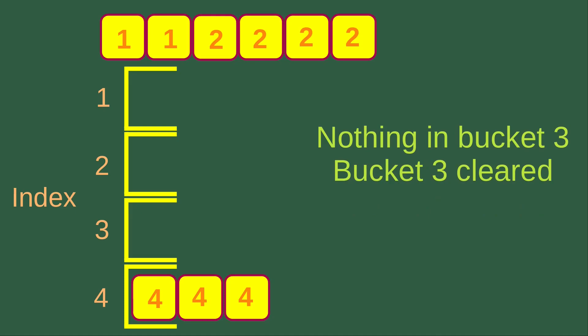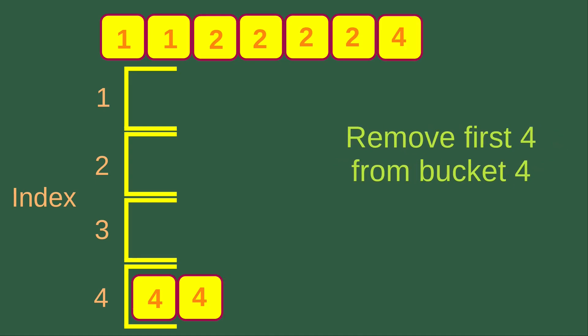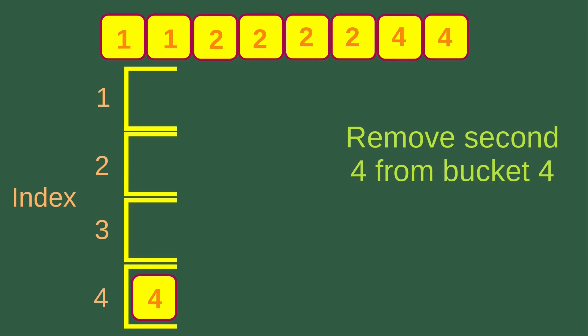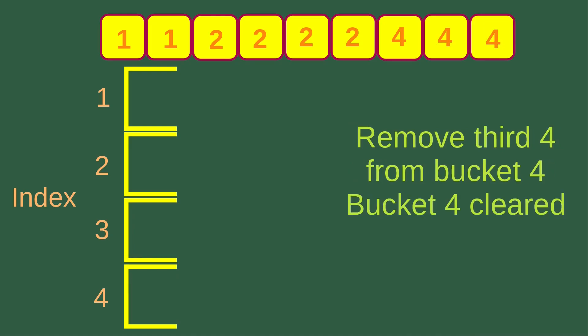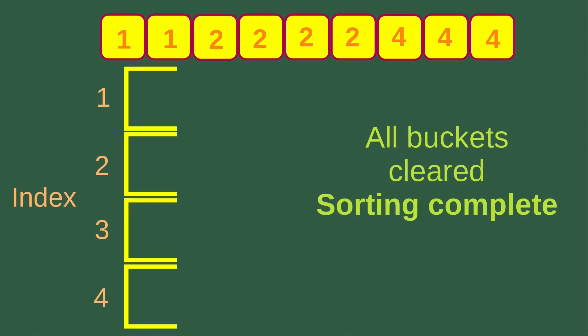Bucket three has nothing inside, so it is already cleared. Now I go to index four and remove the first four, then the second four, and finally the last four from bucket four — bucket four is also cleared. We can now see that all the numbers are in ascending order, all the buckets are cleared, and the sorting is complete.